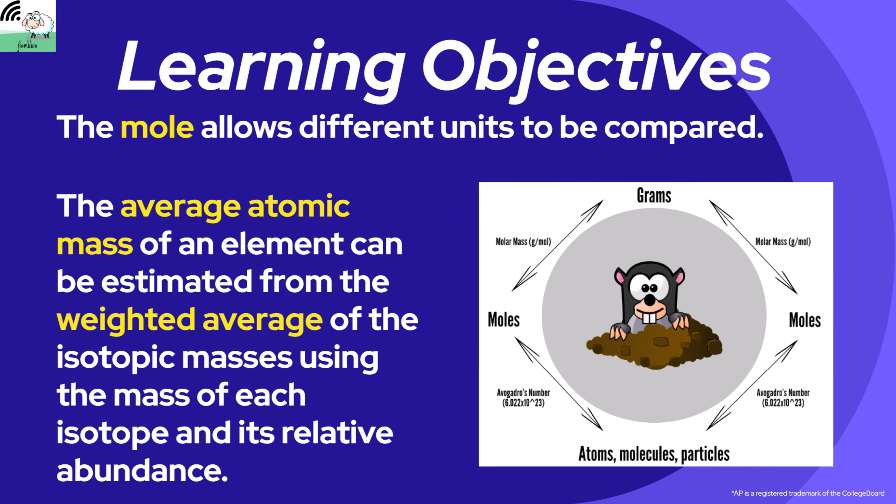Just a little bit about the learning objectives — what I would expect you to hopefully get out of this. This harkens back to what we've talked about at the very beginning of this particular video series: the mole allows for different units to be compared with one another. Moles allow the ability for us to convert grams into something that we can utilize to compare individual compounds in a chemical reaction to determine how much product is produced. The average atomic mass of an element can be estimated from a weighted average — the weighted average of isotopic masses utilizing the mass of each isotope and its relative abundance.